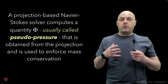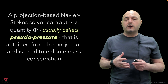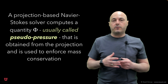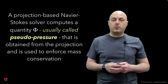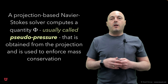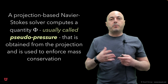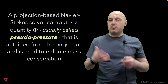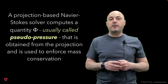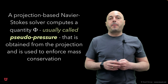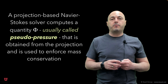If you are familiar with projection methods or projection-type solvers within the context of pressure-based Navier-Stokes solvers, you're familiar with the fact that we compute a quantity called phi — usually referred to as phi — and we call it the pseudo-pressure, and that comes directly from the projection.